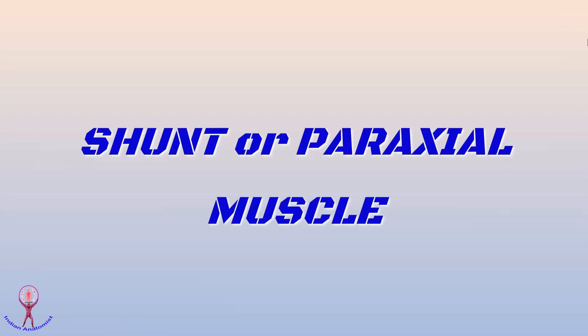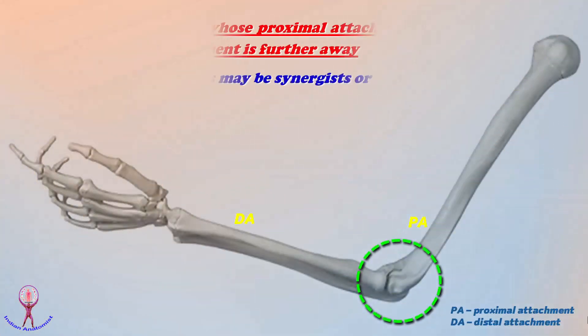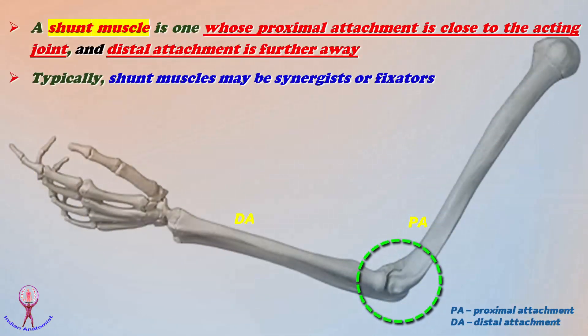The next variety of muscle is shunt muscles, also called paraxial muscles. A shunt muscle is one whose proximal attachment is close to the acting joint, and the distal attachment is further away from that joint.